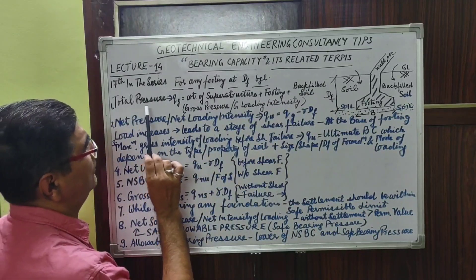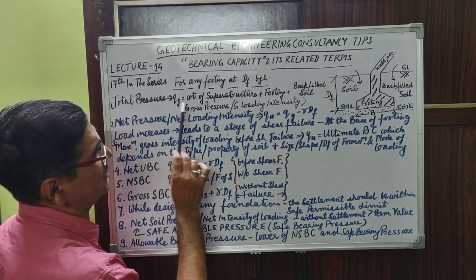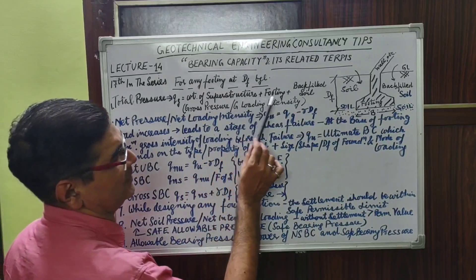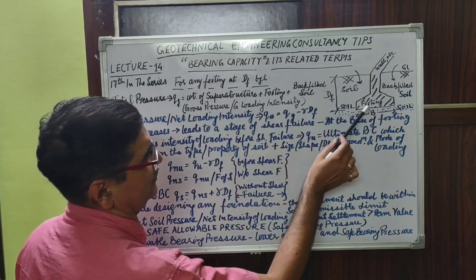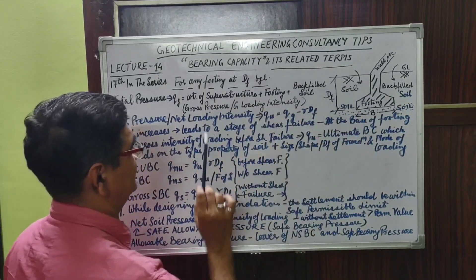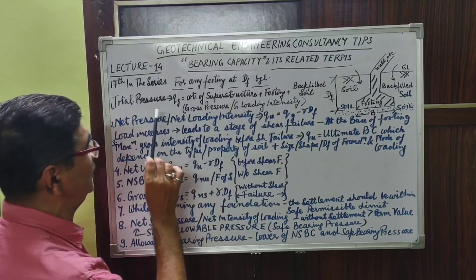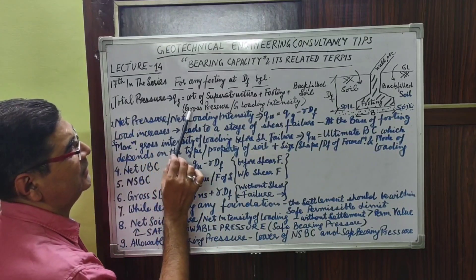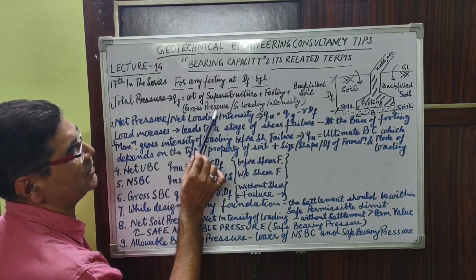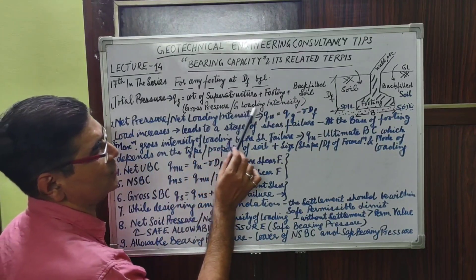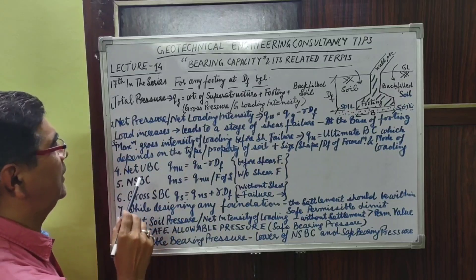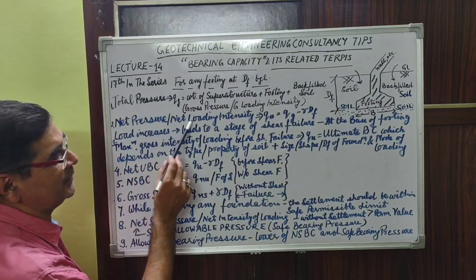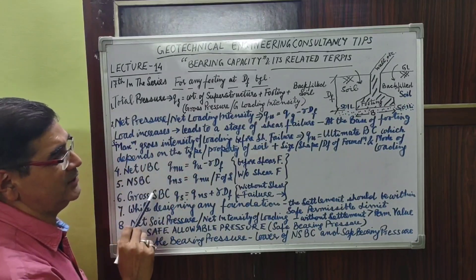So total pressure comprises the weight of the superstructure plus the weight of the footing and the backfill soil. This is termed as gross pressure or gross loading intensity.